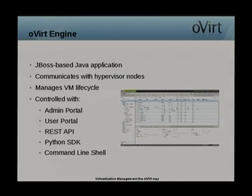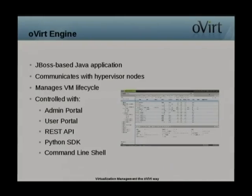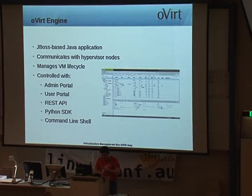The oVirt Engine is a JBoss Java application used to communicate with hosts and to manage the entire virtual machine lifecycle, including deployment, starting, stopping, migrating, and monitoring of virtual machines. It provides several methods for interaction: the web admin portal — a web-based UI for sysadmins to perform advanced actions; a self-service user portal with a simplified web-based UI for simple management use cases; a REST API allowing third-party applications to perform virtualization actions; a software development kit providing Python bindings for the API; and a command line shell that communicates with the engine via the SDK to script and control your environment.